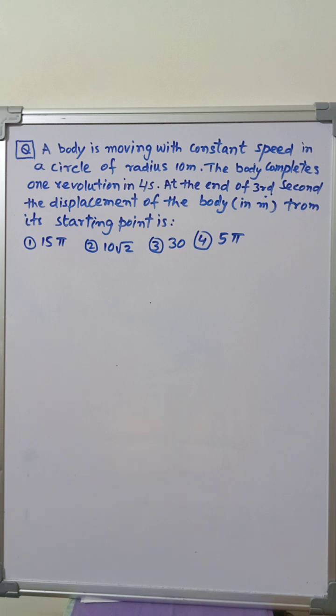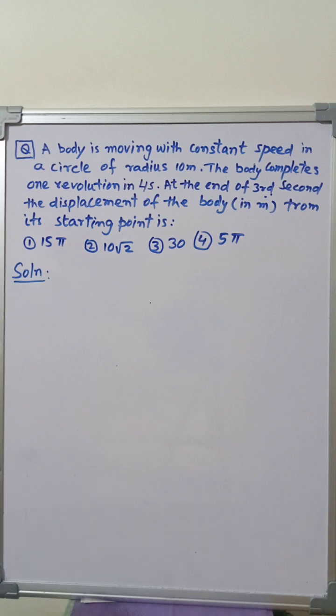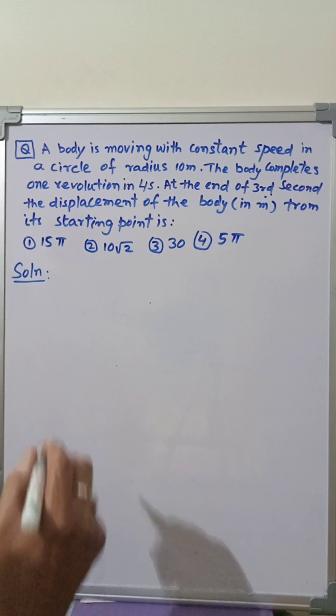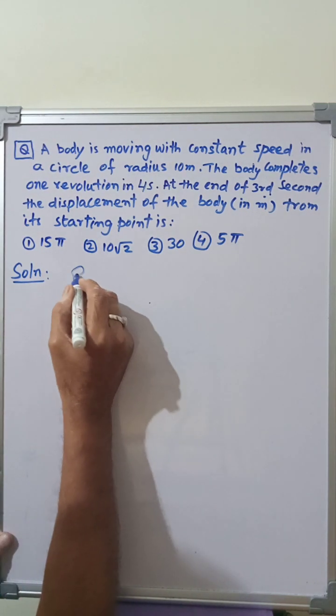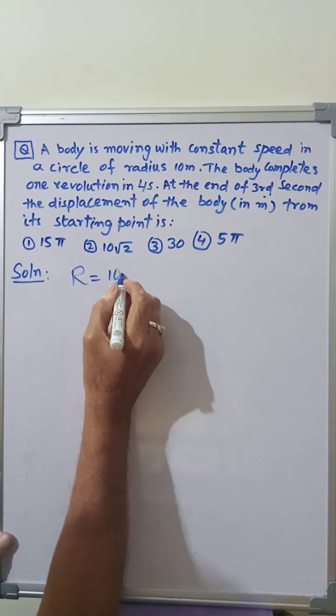Now, for this solution, it is given in the question that the radius of the circular path is 10 meters. Therefore, we write R is equal to 10 meters.